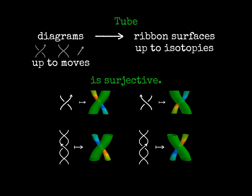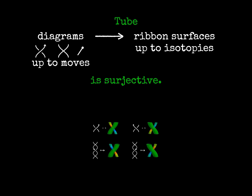So, we have a way to describe all possible interactions of the ribbon tubes just using regular and virtual crossings. In other words, the tube function is surjective. Given any ribbon surface, we can describe it using a diagram.